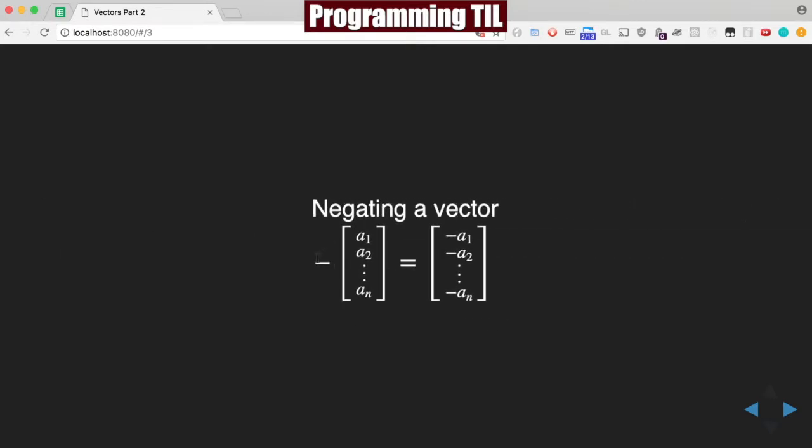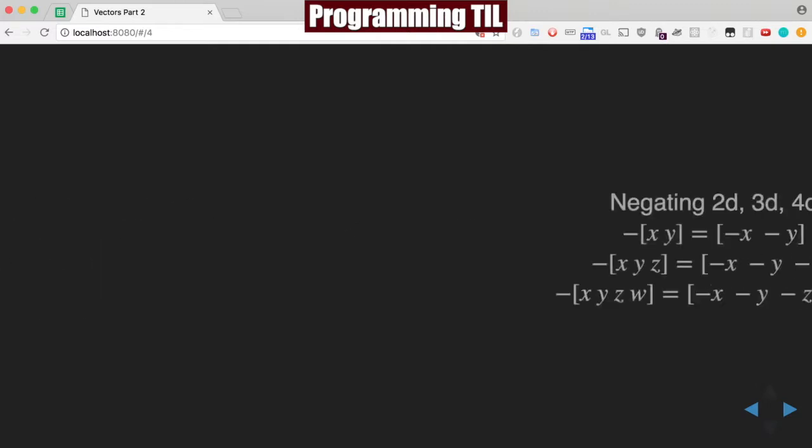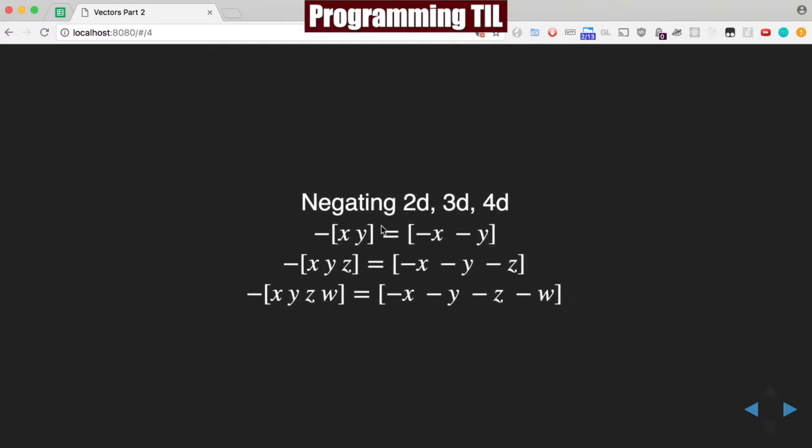An example: if we have negative on this vector here, every single element is the negative. So if we're going to negate in 2D, 3D, or 4D,